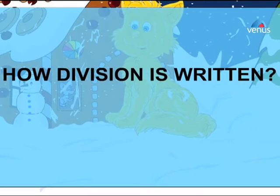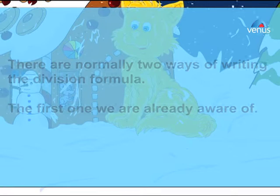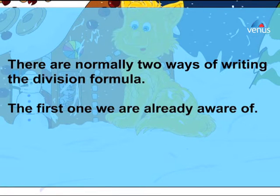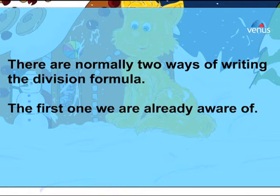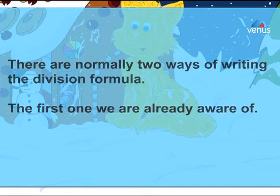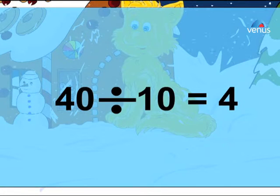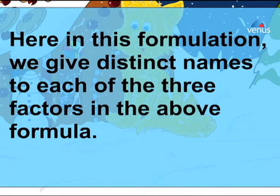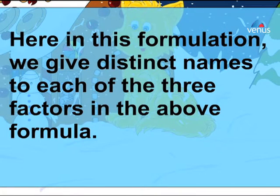How division is written: there are normally two ways of writing the division formula. The first one we are already aware of — 40 divided by 10 equals 4. Here in this formulation we give distinct names to each of the three factors.